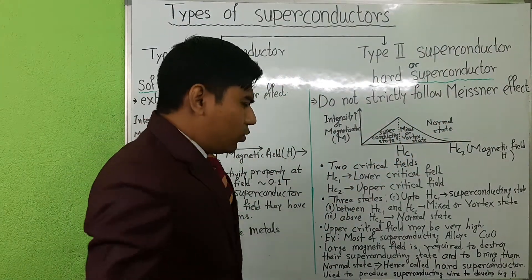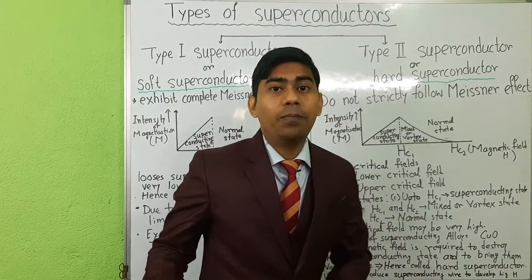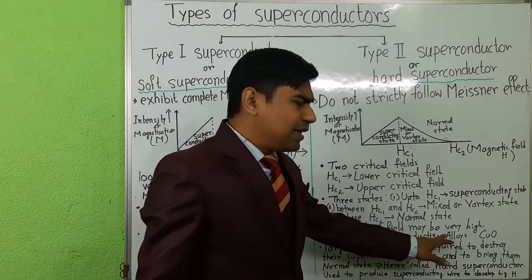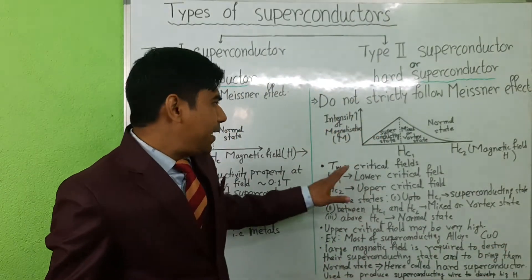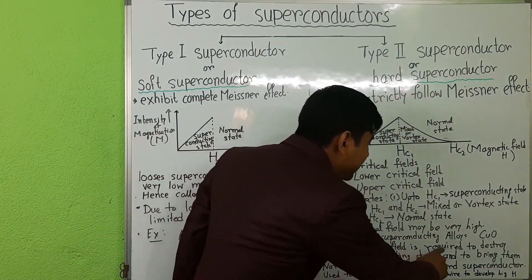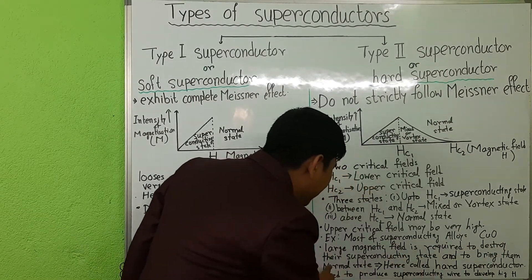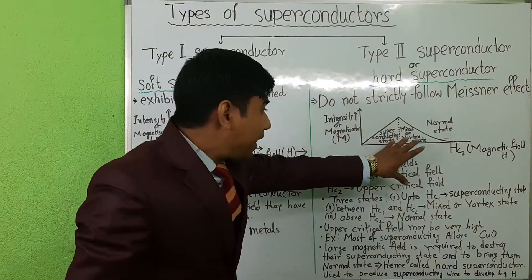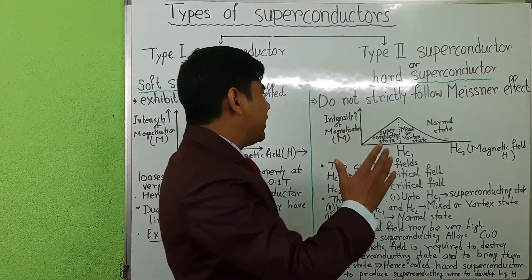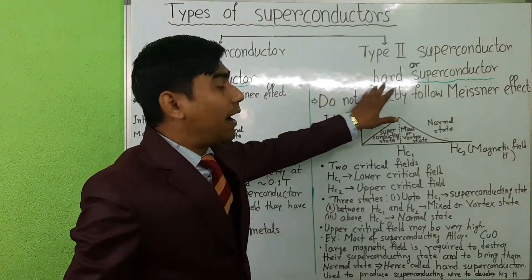There are three states. The upper critical field may be very high — hundreds of tesla or more. Most superconducting alloys, like cupric oxide, come under type 2 superconductors. Since a large magnetic field is required to destroy their superconducting state and bring them to the normal state, this type of superconductor is also called a hard superconductor.